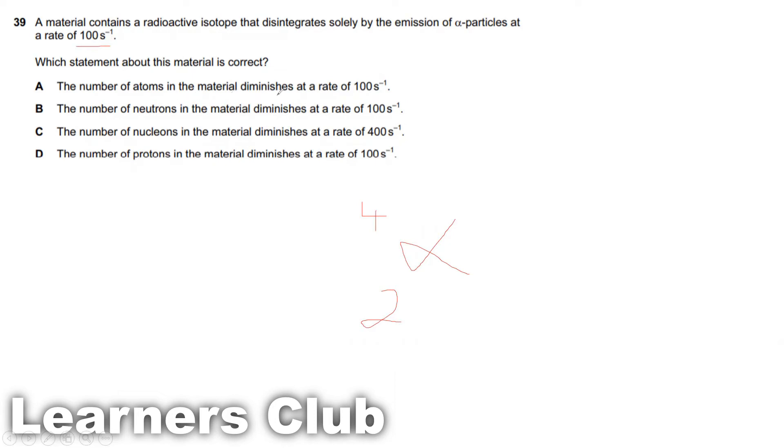The number of atoms in the material diminishes at a rate of 100 per second. So it's not an atom because alpha particle is positively charged. So that's wrong. The number of neutrons in the material diminishes at a rate of 100 per second. No, there are 2 neutrons. So if they talk about 1 alpha particle, that means 200 per second is getting disintegrated. So that's wrong because they have mentioned 100 instead of 200.